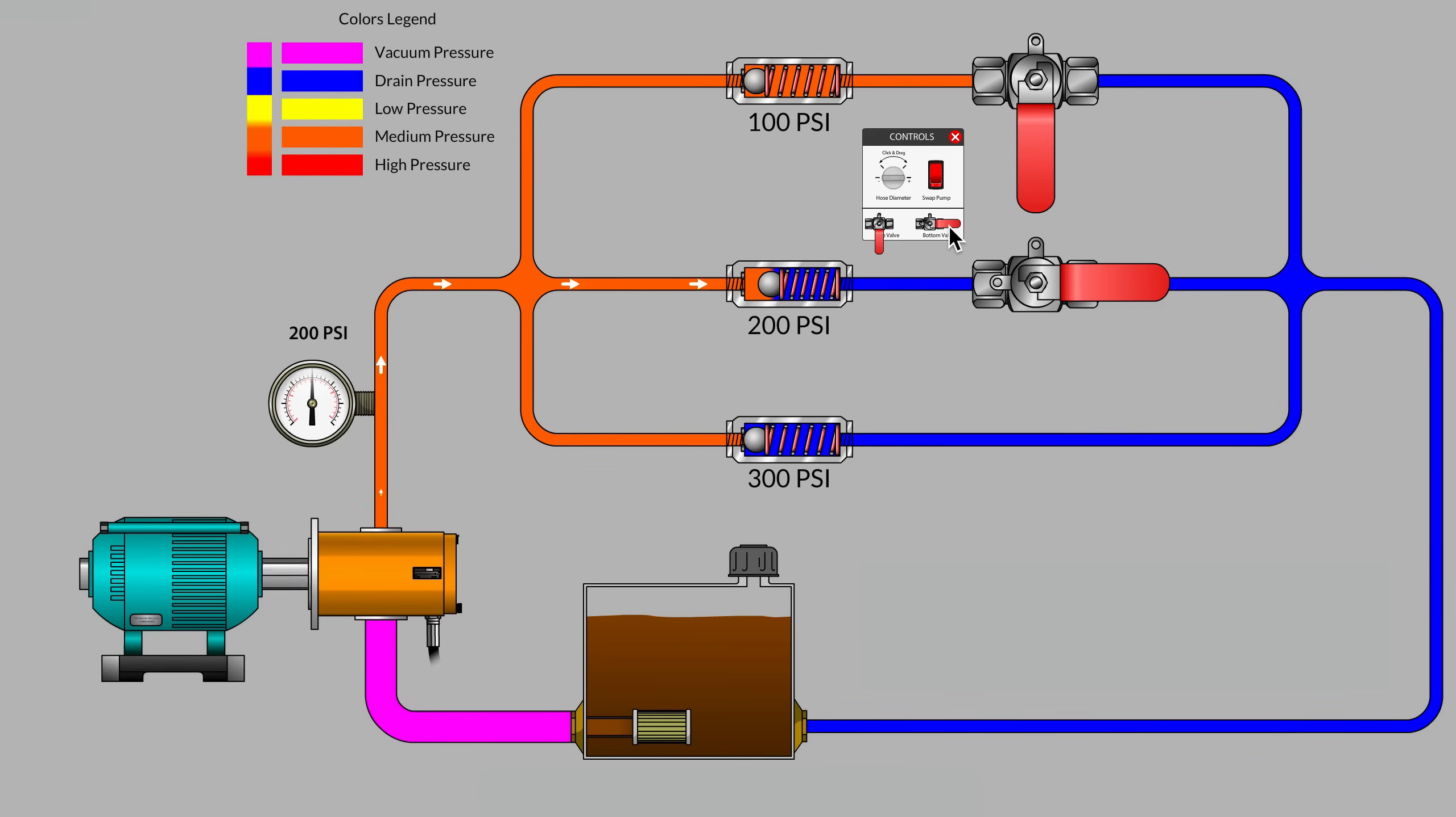Now if we close the bottom valve, it makes sense that the system pressure will rise all the way to 300 psi because that's our only remaining path for fluid in the hydraulic circuit. What happens if I leave the 200 psi path blocked and I open the shutoff valve on the top parallel branch? Quite correct. We go back to 100 psi as the top branch becomes our path of least resistance once again.